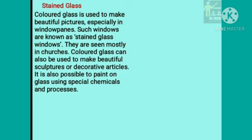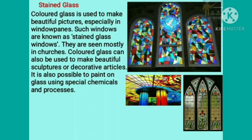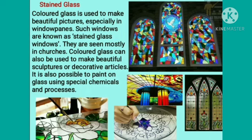Stained glass. Colored glass is used to make beautiful pictures, especially in window panes. Such window panes are known as stained glass windows. They are seen mostly in churches. Colored glass can also be used to make beautiful sculptures or decorative articles. It is also possible to paint on glass using special chemicals and processes.